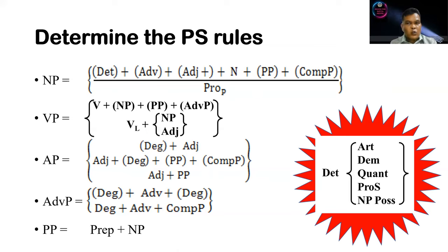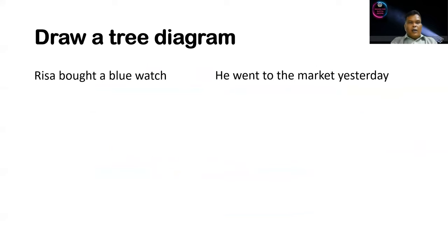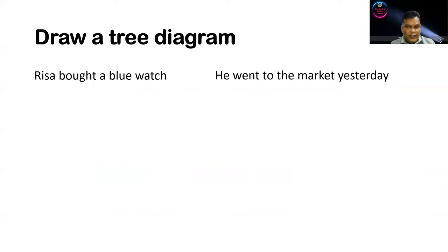After knowing these PS rules, it will be much easier for us to draw a tree diagram for any sentence that needs to be analyzed. Now let's find out how these PS rules work by using a tree diagram. I have two sentences: the first one is 'Risa bought a blue watch,' and the second one is 'He went to the market yesterday.' The two sentences differ in the elements that compose them.